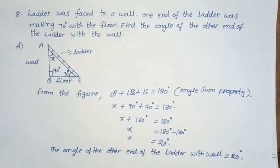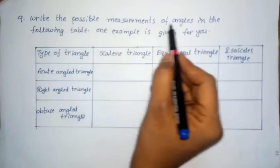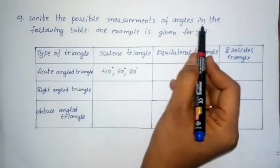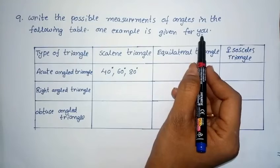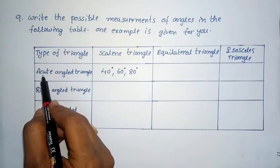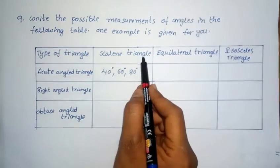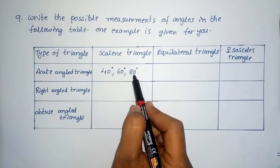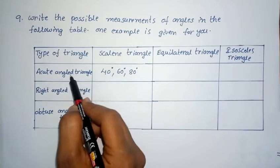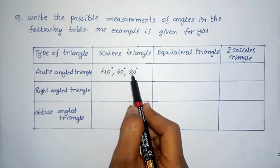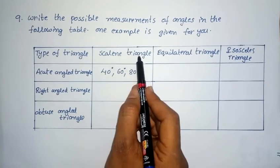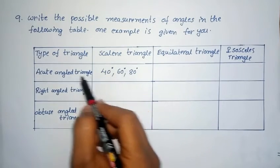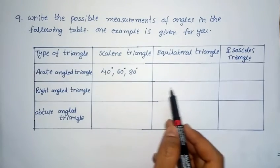Next problem, ninth: write the possible measurements of the angles in the following table — one example is given. The types of triangles include acute angle triangle and scalene triangle. The three angles must satisfy acute angles (all less than 90 degrees) and scalene triangle (all angles different). So 40, 60, 80 — all less than 90 degrees and all different — satisfy both conditions.